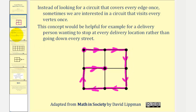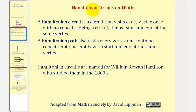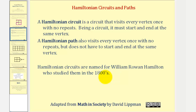Which leads us to the definitions of Hamiltonian circuits and Hamiltonian paths. A Hamiltonian circuit is a circuit that visits every vertex once with no repeats; being a circuit, it must start and end at the same vertex. A Hamiltonian path also visits every vertex once with no repeats, but does not have to start and end at the same vertex. Hamiltonian circuits are named after William Rowan Hamilton, who studied them in the 1800s.